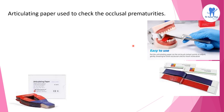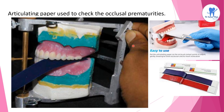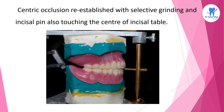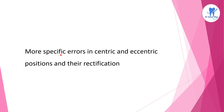For checking the occlusal prematurities, we are using articulating paper. The articulating paper is used for checking the occlusal prematurities. The centric occlusion is re-established with selective grinding, with the incisal pin also touching the center of the incisal table. Centric occlusion is thus re-established.